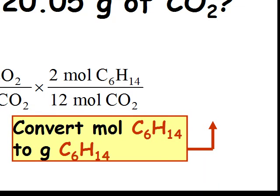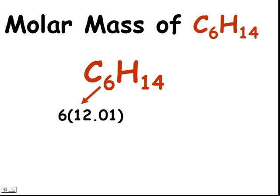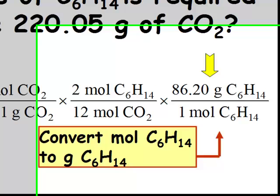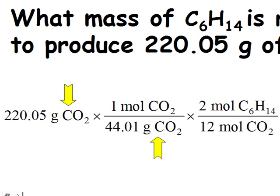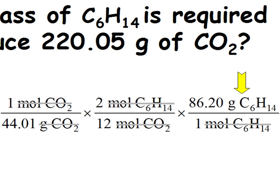The last step is to convert moles of C6H14 to grams of C6H14. For this, we need the molar mass of C6H14, which we calculate by adding 6 times the atomic mass of carbon to 14 times the atomic mass of hydrogen, giving a total of 86.20 grams per mole. We multiply by the conversion factor 86.20 grams of C6H14 over 1 mole of C6H14. The grams of CO2 cancel, the moles of CO2 cancel, and the moles of C6H14 cancel, leaving us with the unit grams of C6H14.